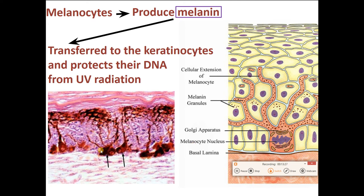We can see actual melanocytes as the darker-stained cells in the micrograph — here's one with its legs coming up. In the diagram, the melanin granules are clustered on the sunny side of the nucleus, with the free space at the top and the sun's rays coming in, so the melanin is positioned on that sunny side.